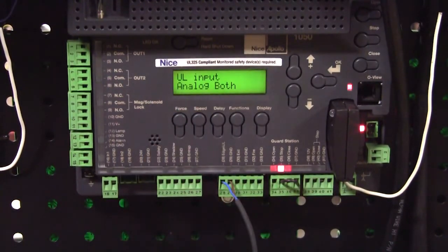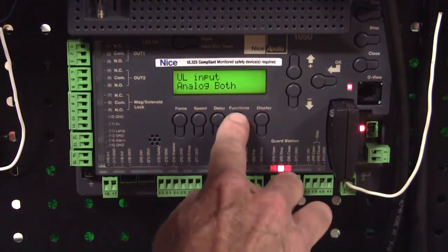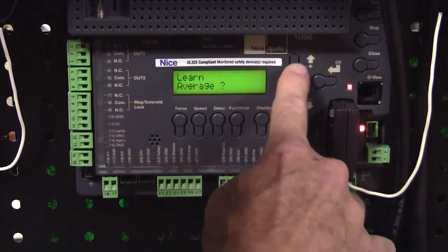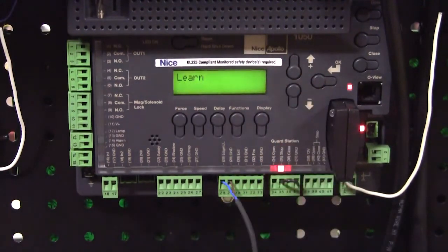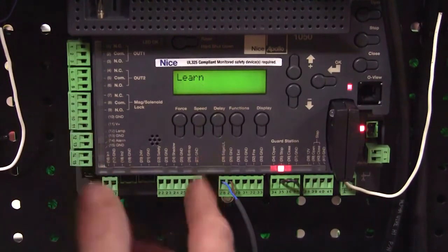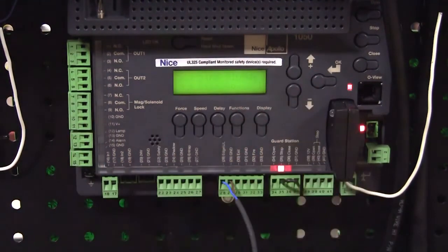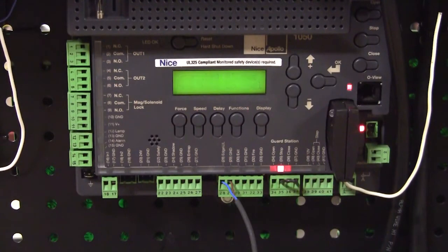So now if I go into my learn mode, learn swing average, I'm now ready to learn. I've got my motor connected, I've got my limit set, my gate is halfway open and halfway closed. I'm going to press OK. It's going to scan the blue bus. It's looking for my one monitored entrapment device, at least one. In this case, it's going to find the UL or find the 10k resistive edge.